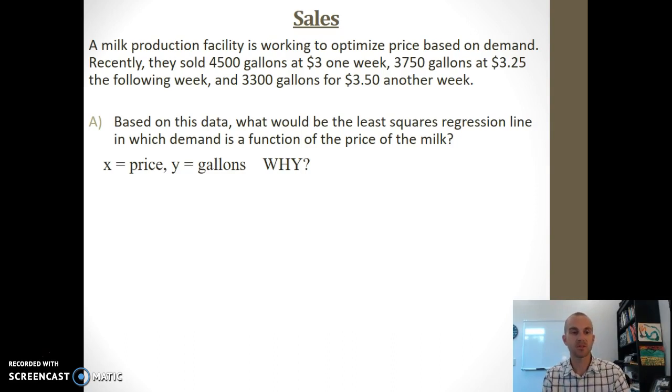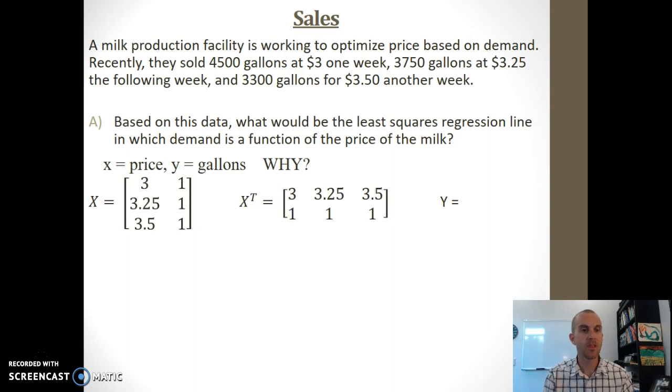Now we need the X matrix, the transpose of X matrix, and the Y matrix. My X matrix would have $3, $3.25, and $3.50 in the first column, and then 1 in the second column for each row. The transpose would take my first column and make it my first row, and my second column would become my second row. My Y matrix will be the number of gallons sold at each of those prices.